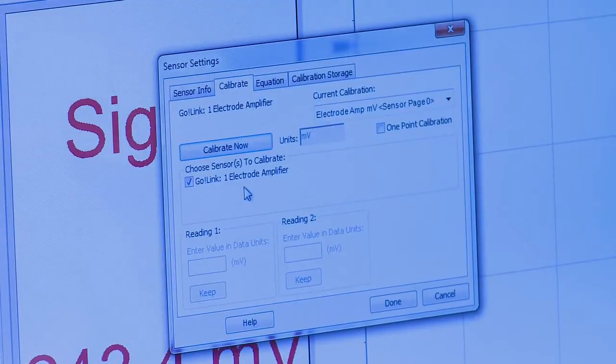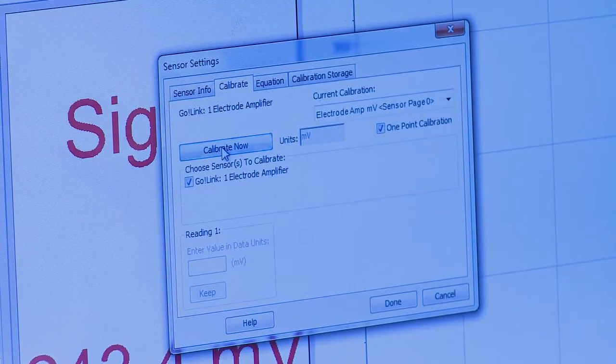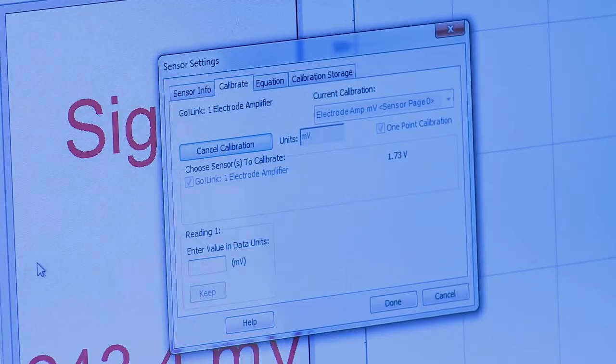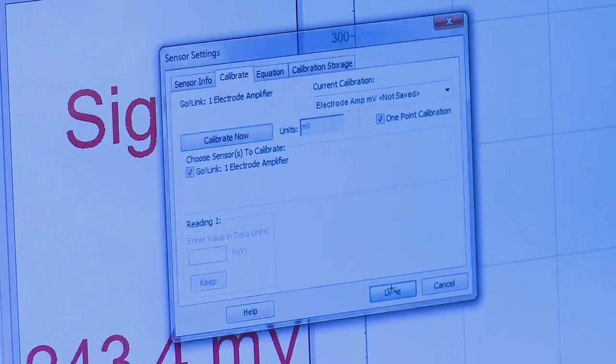In this window, we want to select one-point calibration and click Calibrate Now. And then we enter a value here of 320. Press the Keep button and click Done.